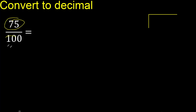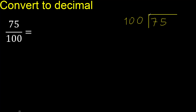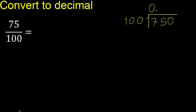75 divided by 100. 75 is less, therefore complete with 0. Here, 0 point — 100 multiplied by...